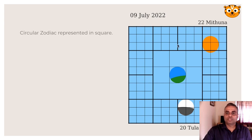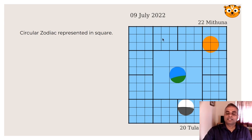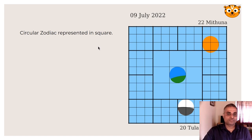What you see here is a circular zodiac represented in a square. A zodiac is 12 constellations along the ecliptic in the east-west direction. So totally we have 12 constellations represented in a square. This kind of representation is done in South Indian astronomy, Indic astronomy.